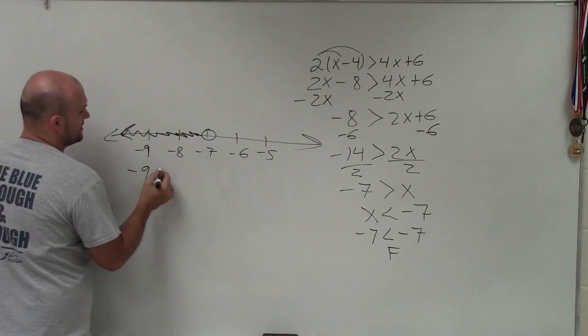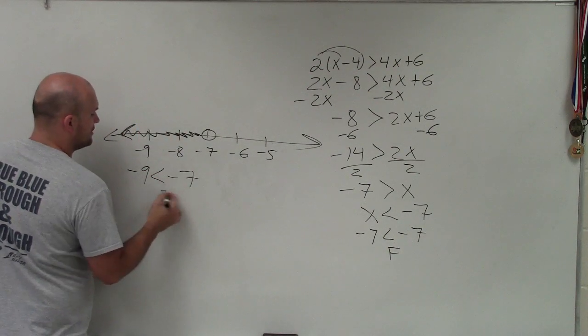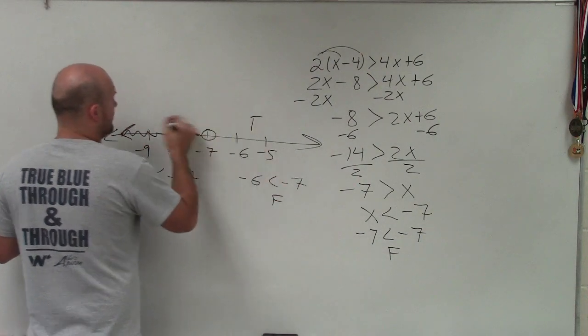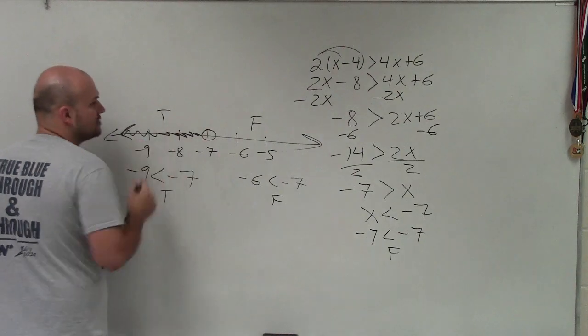Let me just prove it to you. Negative 9 is less than negative 7—true. Negative 6 is less than negative 7—false. So if that's false, that's true. Shade towards where it's true.